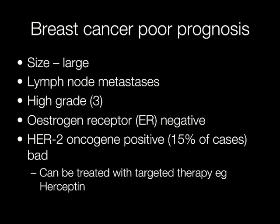Features of a breast carcinoma giving a poor prognosis include a large size, lymph node metastases, high grade, oestrogen receptor negative and HER2 oncogene positive. If the HER2 is positive, these patients can be treated with targeted therapies such as Herceptin.